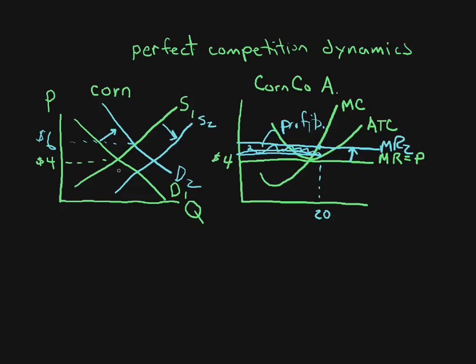And you'll notice it doesn't stop here, because here the price is still high enough where this firm is making a profit and more companies are attracted into the business. It stops once this price drops back down to $4 here. And we see this condition again where we have zero economic profits.